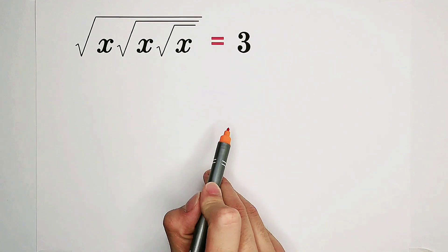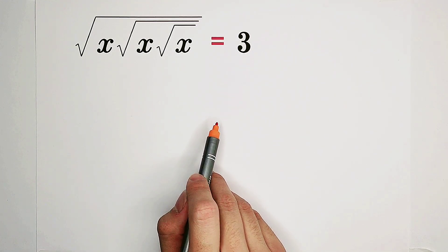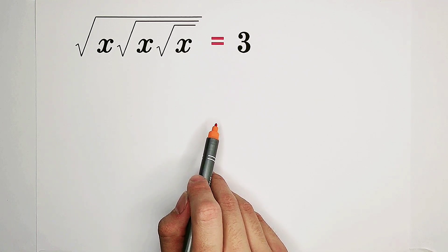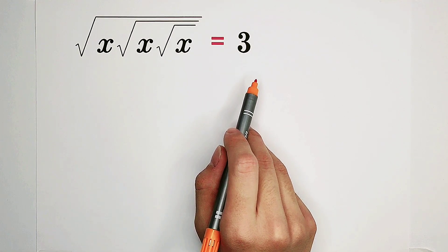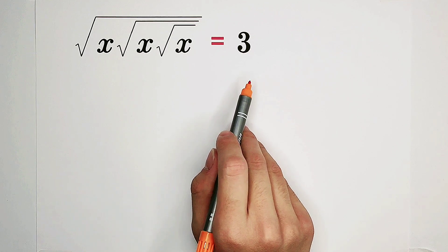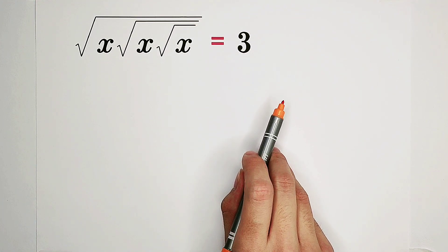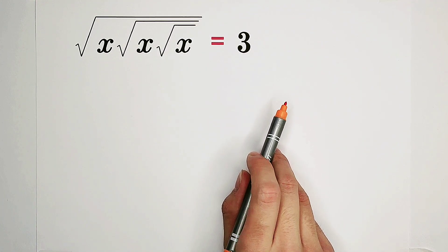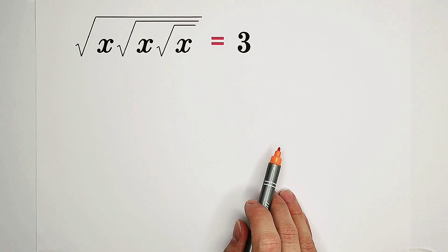Very good. What shall we do? Maybe we're going to say, at the very first step, we square both sides, and then again square both sides, and then again square both sides — that's three times.